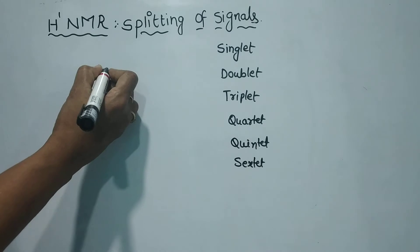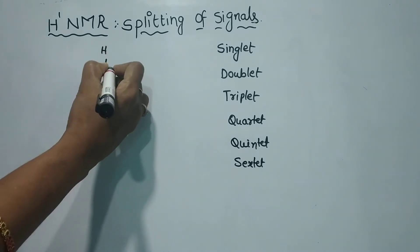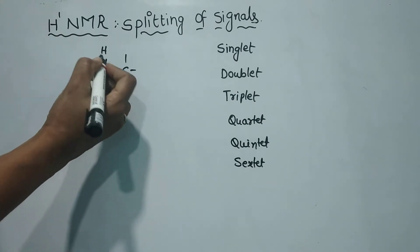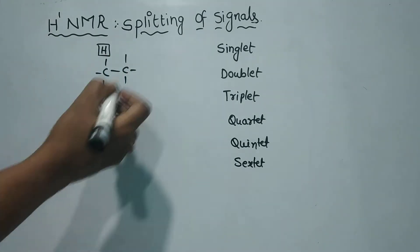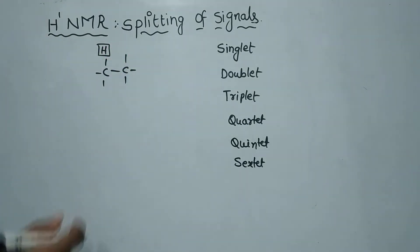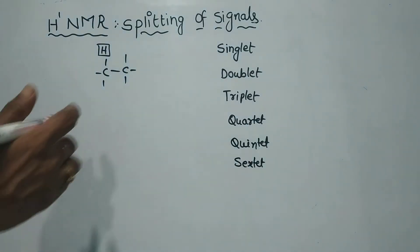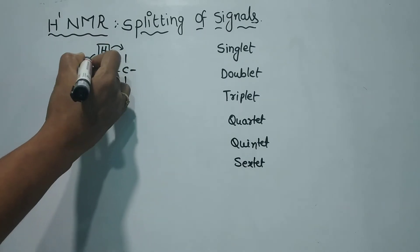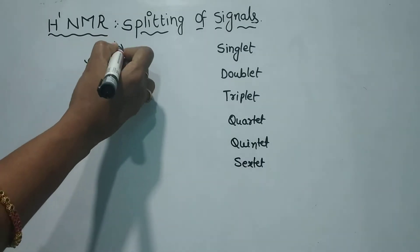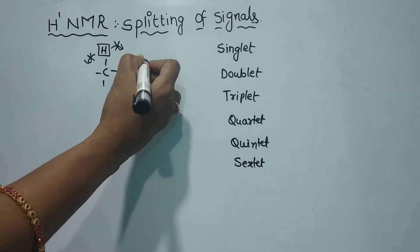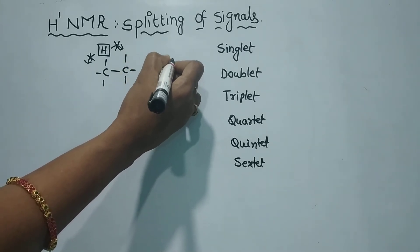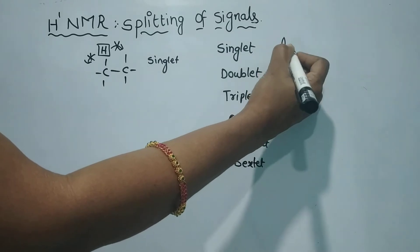First, we will introduce this molecule. In this case, there is only one hydrogen atom. There is no adjacent hydrogen atom. If we consider splitting of this hydrogen atom, there is no adjacent hydrogen atom. Therefore, we have only a singlet signal — we have only a singlet peak.